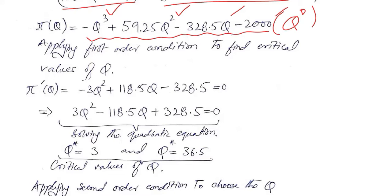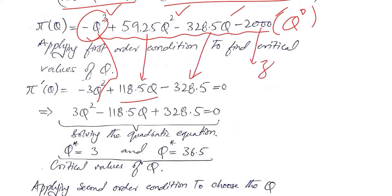Taking its derivative gives us each term in sequence, and the constant term reduces to 0. The first order condition is completed once we equate the first order derivative to 0.